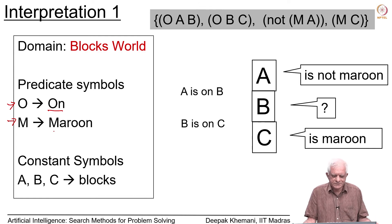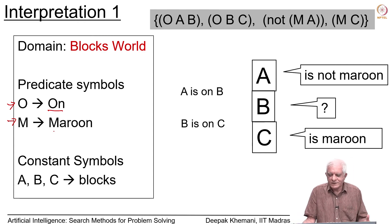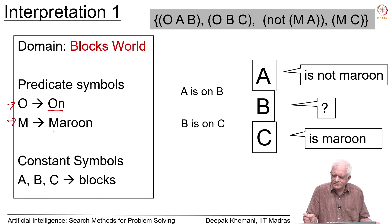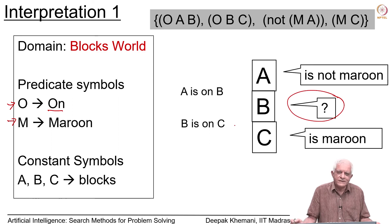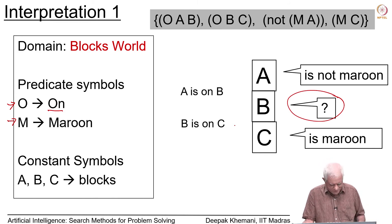Notice that we have not said anything about the color of B — we have simply said A is not maroon, C is maroon, A is on B and B is on C. Once we have created a domain and an interpretation, it is clear what the knowledge base is talking about, but that comes only after you have pinned down a domain and a mapping. This is of course a model for the knowledge base. Can you think of another domain? The same four sentences could be talking about something entirely different.